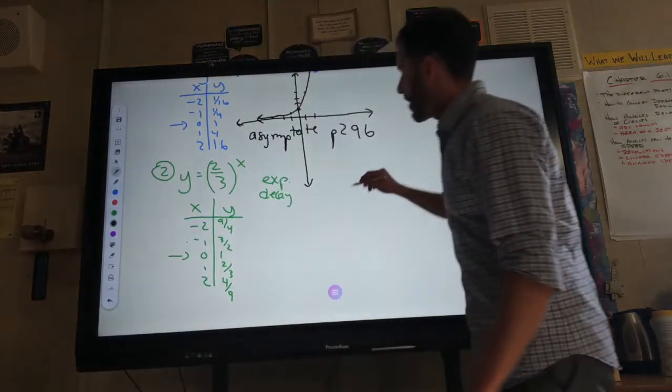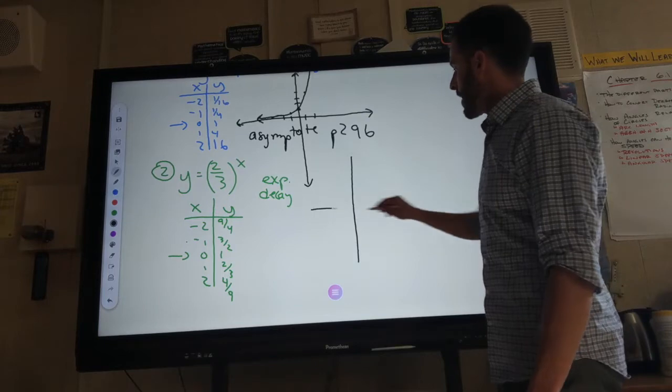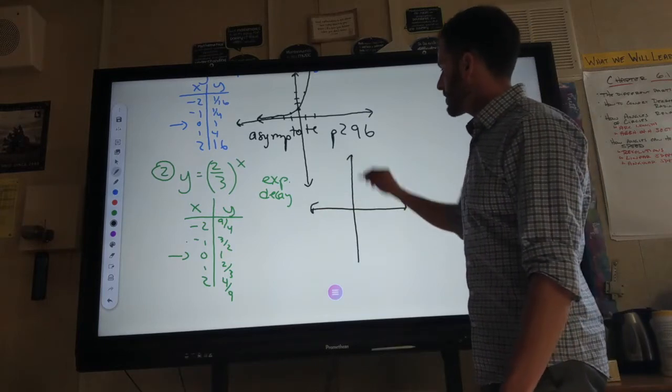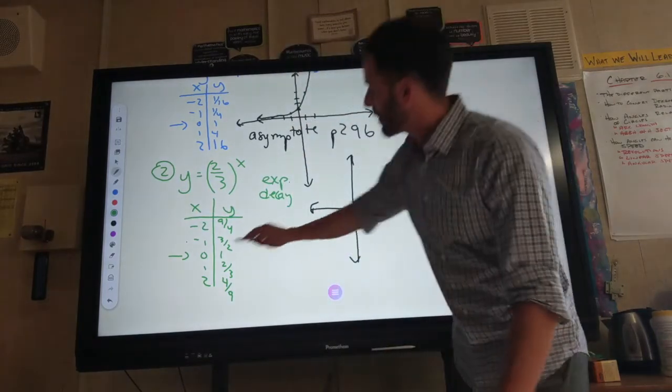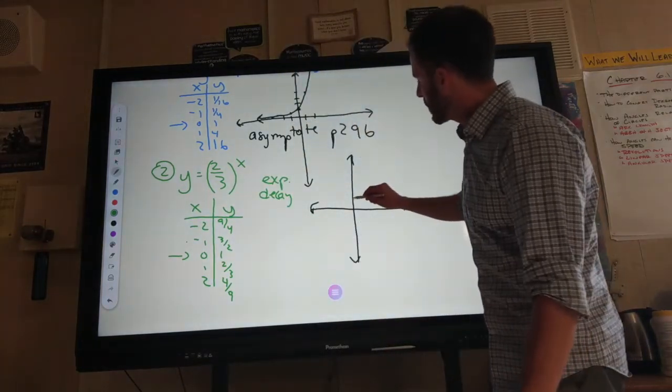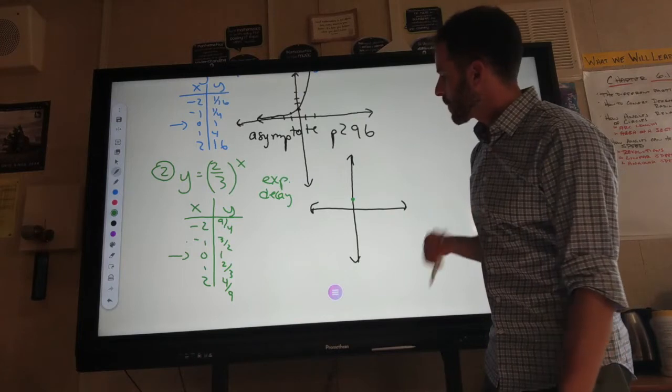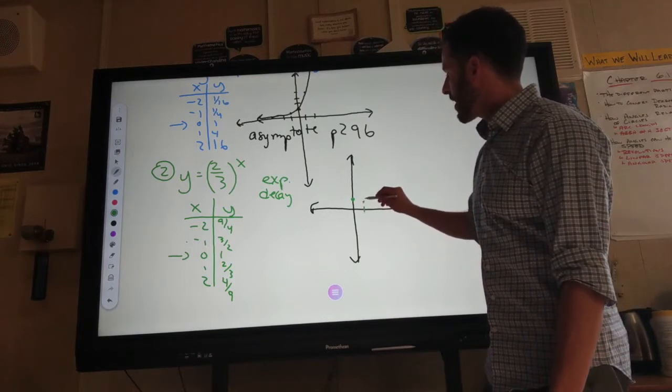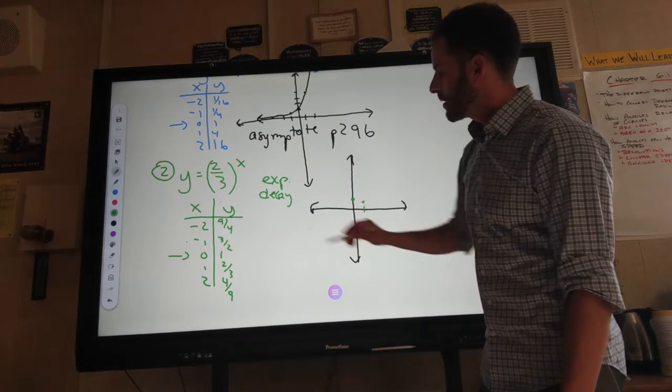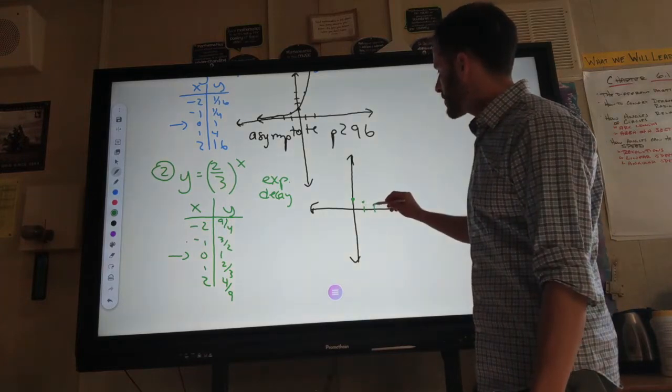Over here, I'll make my x and y axis. Let me try to color code this. So, let's start with 0, 1. I have a point here. 1, 2 thirds. So it's a little bit below 1. 2, 4 ninths. That's a little less than 2 thirds.